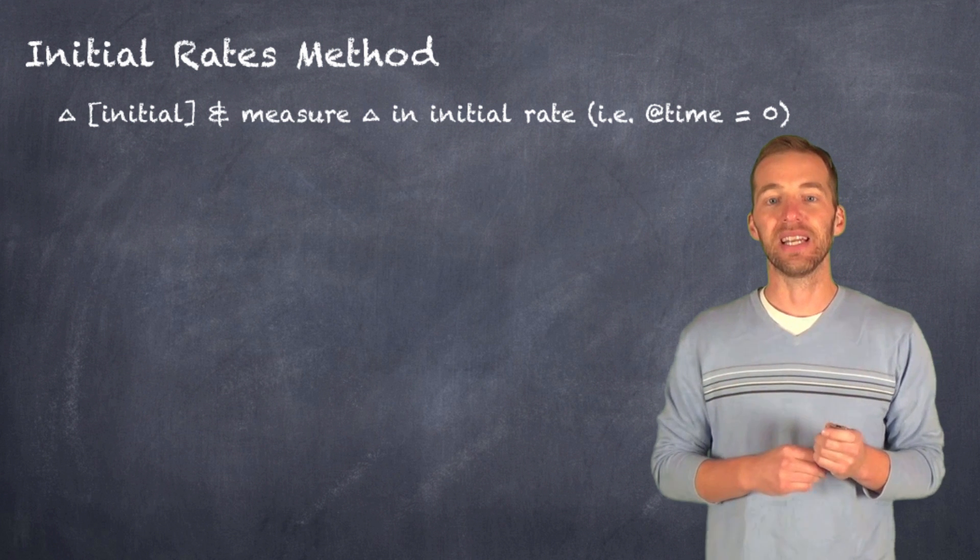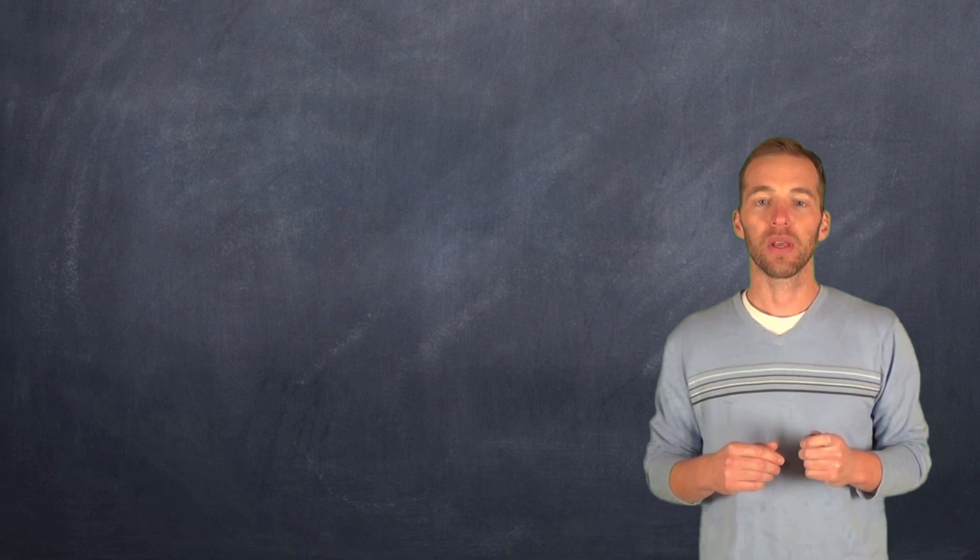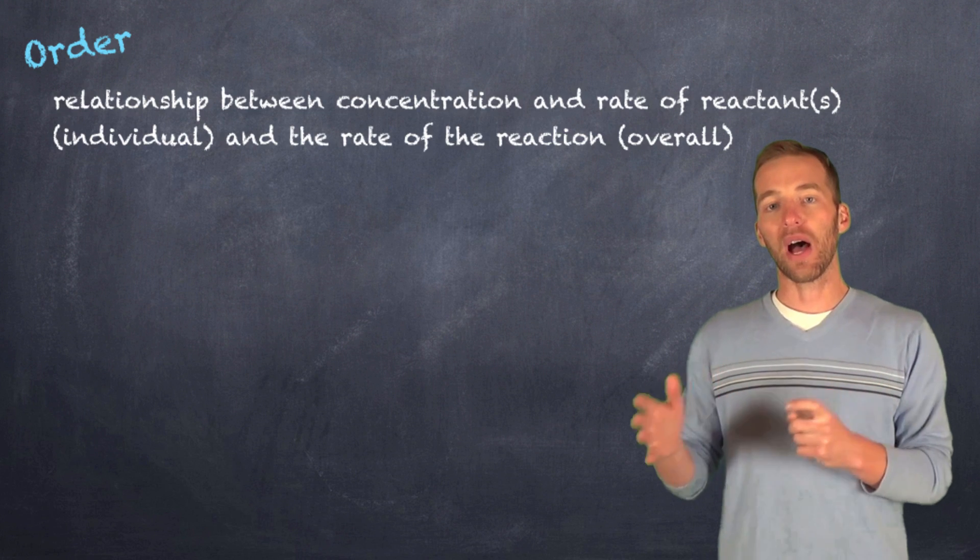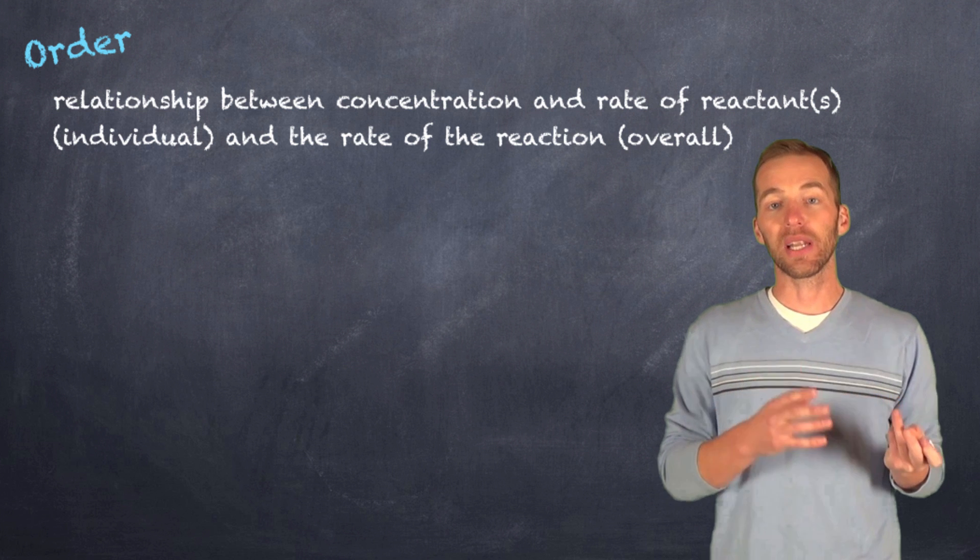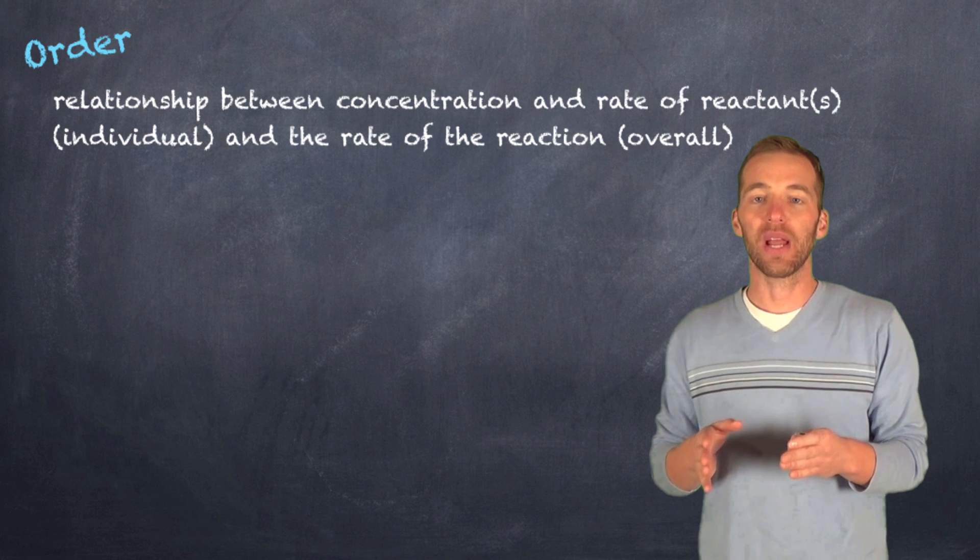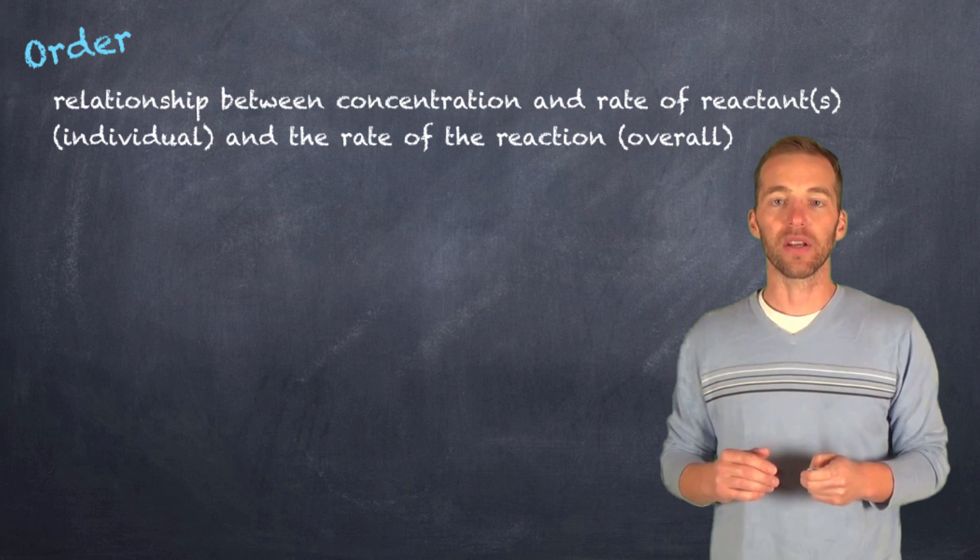And what we do is we evaluate the initial concentrations that we started with, and therefore we refer to this as the initial rates method. Now these orders that are derived from our experimental data, what they do is they give us a relationship between the concentration of the reactants and the overall rate of the reaction.